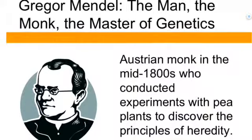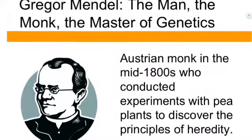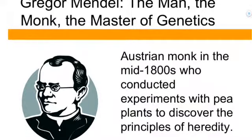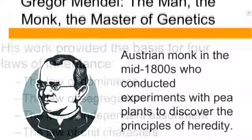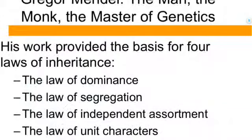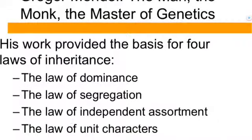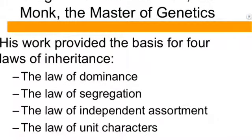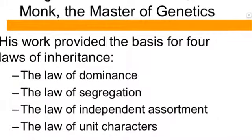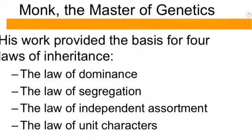He came up with four basic laws of inheritance: the law of dominance, the law of segregation, the law of independent assortment, and the law of unit characters.